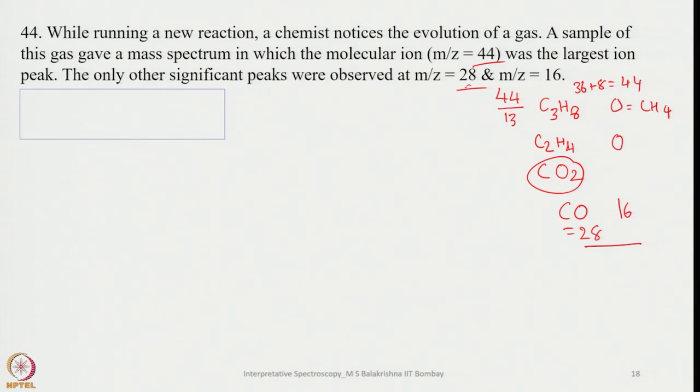If we remove one more oxygen, it becomes CO2 and then CH4 is gone. So straight away we get this. This corresponds to 44, so obviously we can tell this is CO2 and then observed peak at 28 is CO and 16. This information is sufficient to tell that the gas that evolved is CO2.